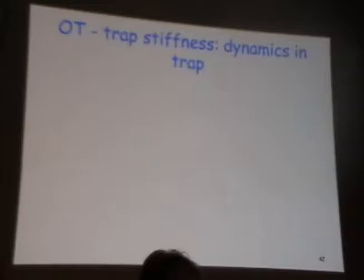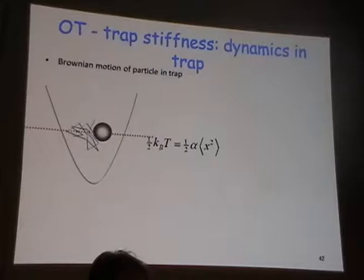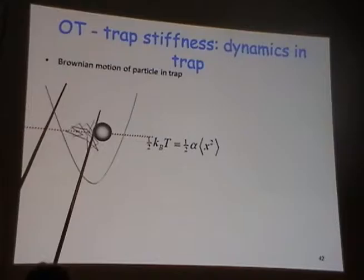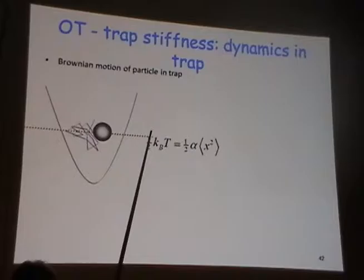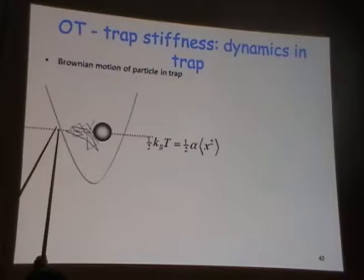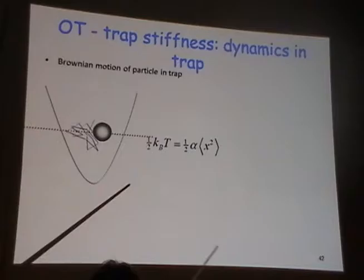One of the things we normally look at in optical tweezers is that it can be characterized as a particle put into a harmonic potential. The particle is trapped in this potential, and depending on where it is in the trap, the trap is stiffer or weaker. If I increase the power of the laser, the walls of the potential get steeper and the particle is trapped much more strongly.